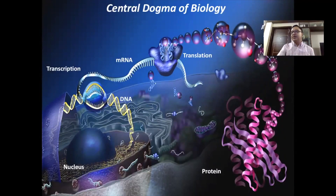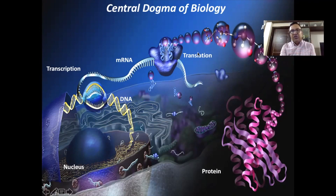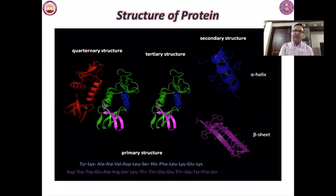It is also important to understand the central dogma of biology — the information flow in an organism. Information flows from DNA to RNA to protein. DNA dictates the structure of mRNA in a process known as transcription, and RNA dictates the structure of proteins in a process known as translation. This central dogma holds true for all organisms.